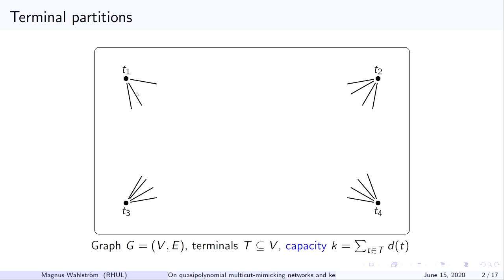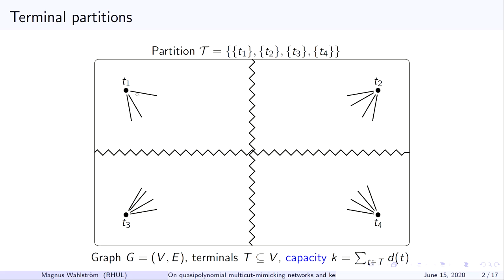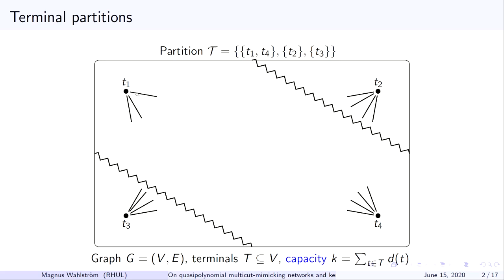So one natural partition, which corresponds to the problem of multi-way cut, is if our four terminals should be shattered into four different connected components, then the solution would be some set of edges that cross these wavy lines, and that number would be one of the numbers we are interested in. Another partition, of course, is if you have a slightly less demanding partition requirement, you're only required to isolate T2 and T3 from the rest, but T1 and T4 are allowed to be connected.